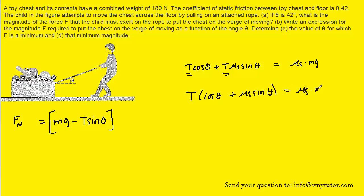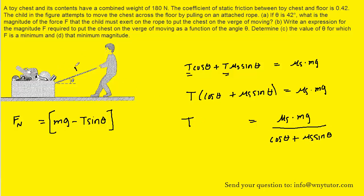We're going to solve this equation for the tension force by dividing both sides by that large quantity in the parentheses, giving us cos theta plus mu_s sine theta in the denominator. Note that the question itself calls that tension force F, so we can replace T with the letter F. Once we've done that, we can plug in the known values to solve for F and get the answer to part a.